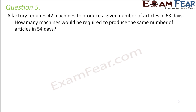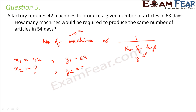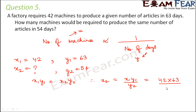Question 5: a factory requires 42 machines to produce a given number of articles in 63 days. How many machines would be required to produce the same number of articles in 54 days? Number of machines and number of days are inversely proportional — more machines means fewer days. Let X1 = 42 and Y1 = 63; Y2 = 54 and we find X2. Using X1·Y1 = X2·Y2, X2 = 42 × 63 divided by 54, which equals 49. So 49 machines would be required.